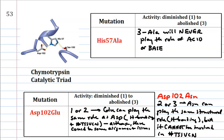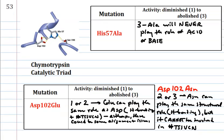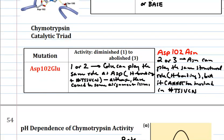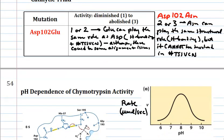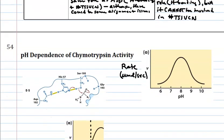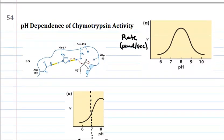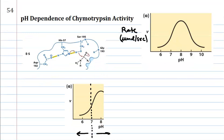All right. So the last thing with chymotrypsin is pH dependence of chymotrypsin activity. So if you look at a plot of the rate or initial rate over here on the top right of chymotrypsin activity versus pH, you get our beloved bell shape, bell shaped curve. And so what is this telling you?